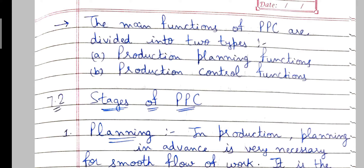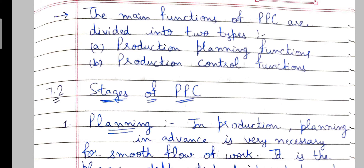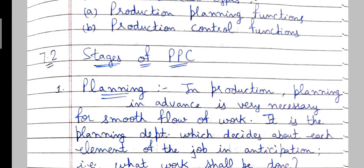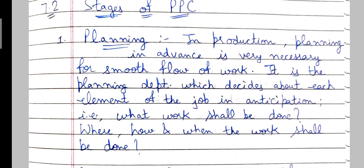The stages of PPC align with its functions. The first production planning function is planning. Planning in advance is very necessary for a smooth flow of work. It is the planning department which decides about each element of the job in anticipation — that is, what work shall be done, where, how, and when the work shall be done.